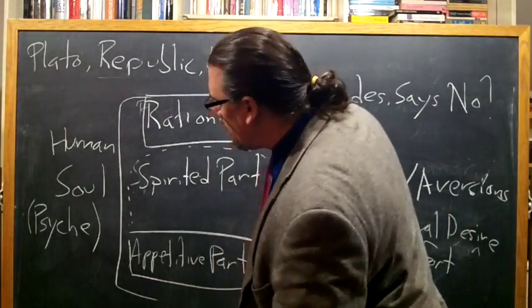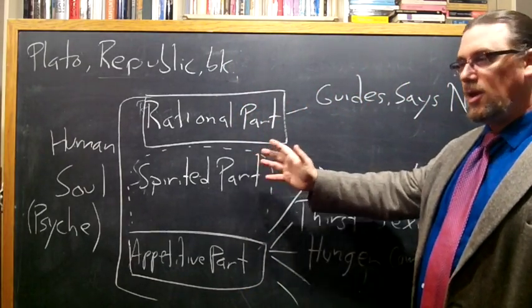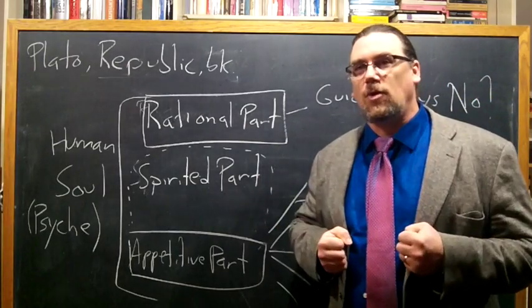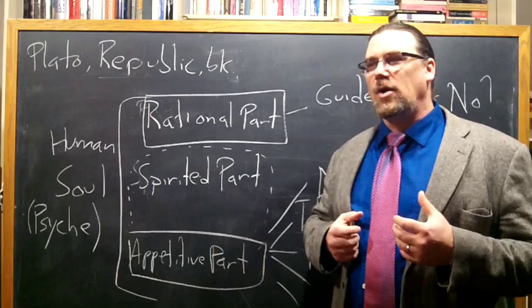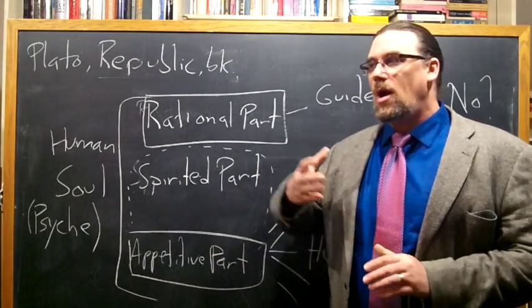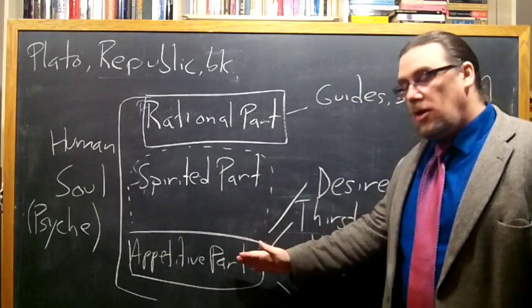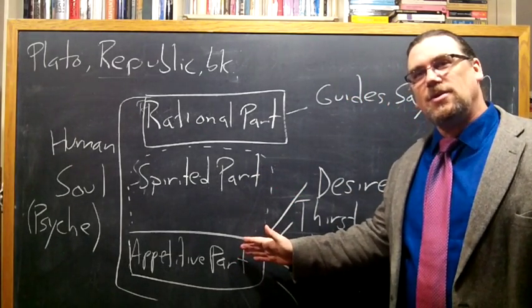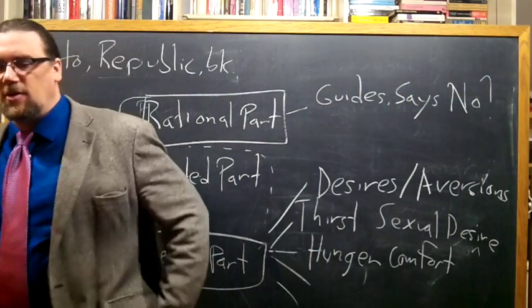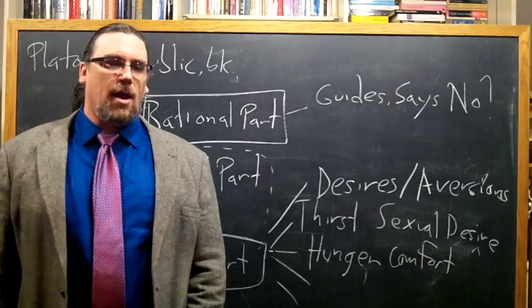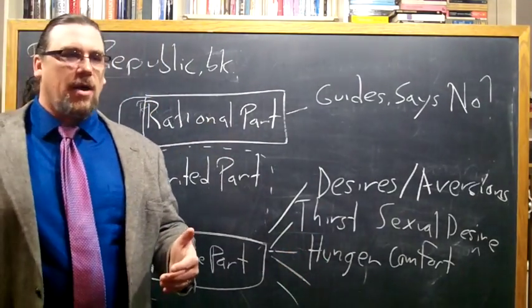Now on the other hand he says, when he thinks he's the sufferer of the wrong, he boils and chafes, and is on the side of what he believes to be justice, because he suffers hunger and cold or other pain. He's only the more determined to persevere and conquer. So what Socrates is saying there, is when this part of the soul is actually going after its own desires for satisfaction, for having one's self-respect restored, for honor, or for the objects of ambition, it'll mute these things. It'll say, look, I'll put up with that.